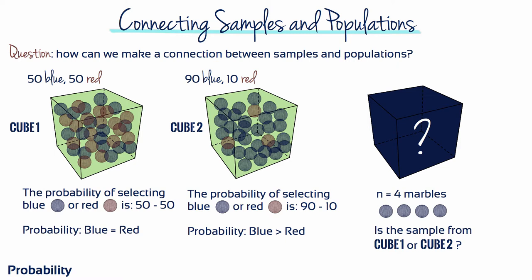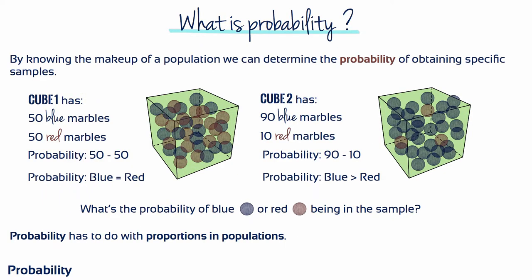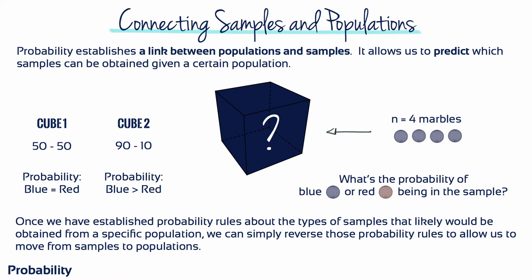Notice that you have now used the sample to make an inference about the population. Probability concerns proportions and populations. By knowing the make-up of a population, we can determine the probability of obtaining specific samples. The cube 1 population had 50 blue and 50 red marbles — the proportions were 50-50, so the probability was also 50-50. Whereas the cube 2 population had 90 blue and 10 red marbles, so the proportions were 90-10 and the probability was also 90-10. Probability establishes a link between populations and samples, allowing us to predict which samples can be obtained from a certain population. Once we've established those probability rules, we can simply reverse them to move from samples back to populations.